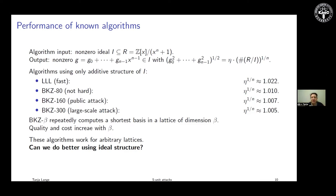These are algorithms we always have to take into account. We sort of understand how they work — I say 'sort of' because the inner loop has different options. The outer loop is clear, but the inner loop is where you plug in different methods: enumeration or sieving for finding the shortest basis. Depending on what you use, the expense and hardware requirements differ. The question I want to answer in this talk is whether we can do better by exploiting the structure of ideal lattices.